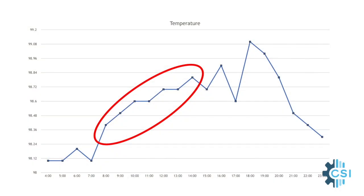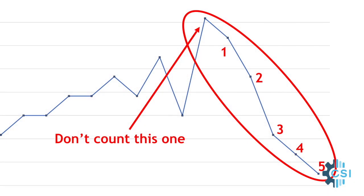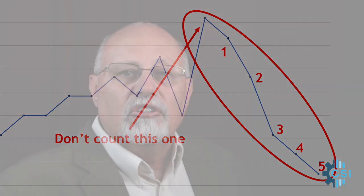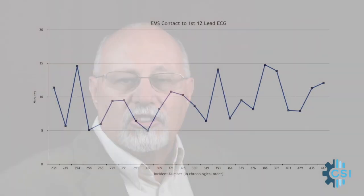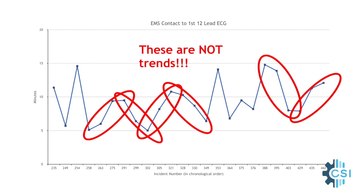Something special is usually required to cause a true trend to show up on your run chart. Here is what a rising trend looks like — five data points in a row that are rising, not counting the first one, and counting two points at the same value by skipping the first and counting the rest. It can also go down. Let's look again at the run chart of EMS contact to first 12-lead ECG time intervals to see if there are any trends. Nowhere do we see at least five data points in a row going up or down — no trends there.